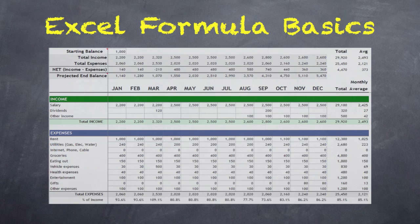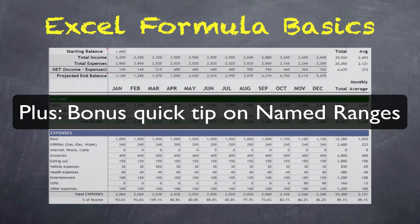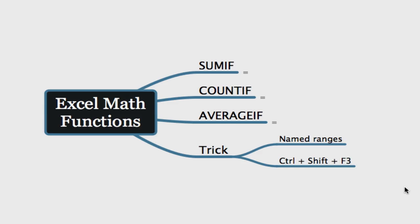Today we're going to look at three different math functions in Excel, and I recommend you study these because you're going to use them to analyze data. The three functions are SUMIF, COUNTIF, and AVERAGEIF. Plus I'll look at a trick or two to do with named ranges and how you can assign them quickly, and there's a keyboard shortcut I'm going to show you: CTRL SHIFT F3. I'll show you how to use it because it's really powerful.